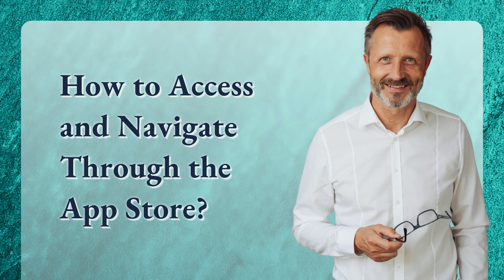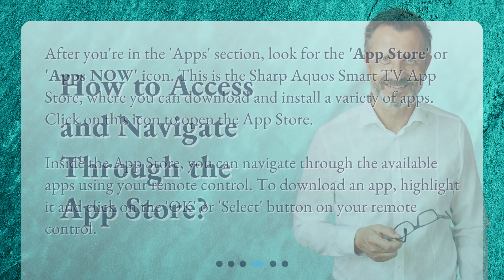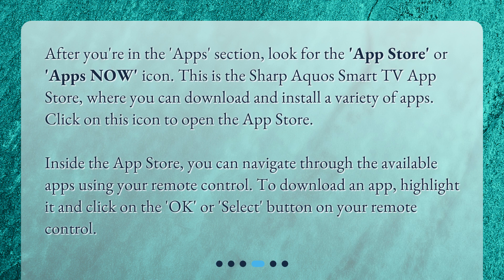How to access and navigate through the App Store? After you're in the Apps section, look for the App Store or Apps NOW icon. This is the Sharp Aquos Smart TV App Store, where you can download and install a variety of apps. Click on this icon to open the App Store. Inside the App Store, you can navigate through the available apps using your remote control. To download an app, highlight it and click on the OK or Select button on your remote control.